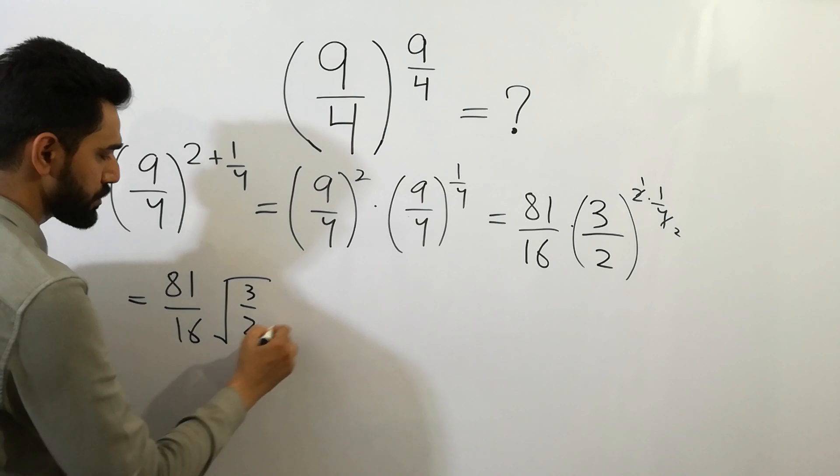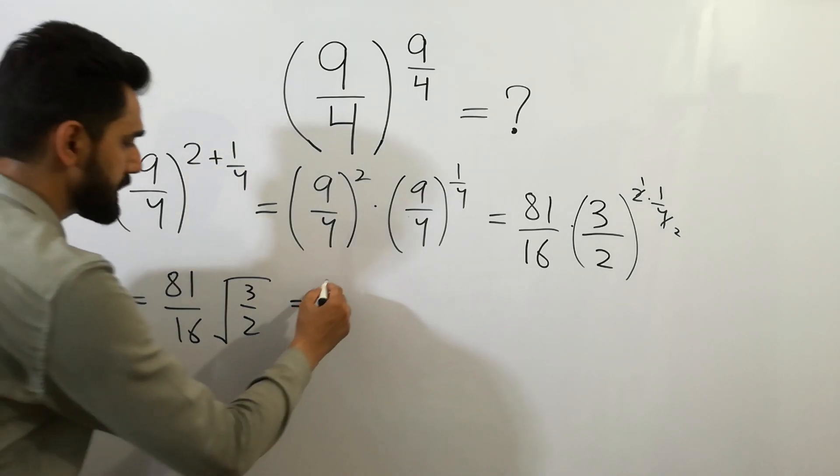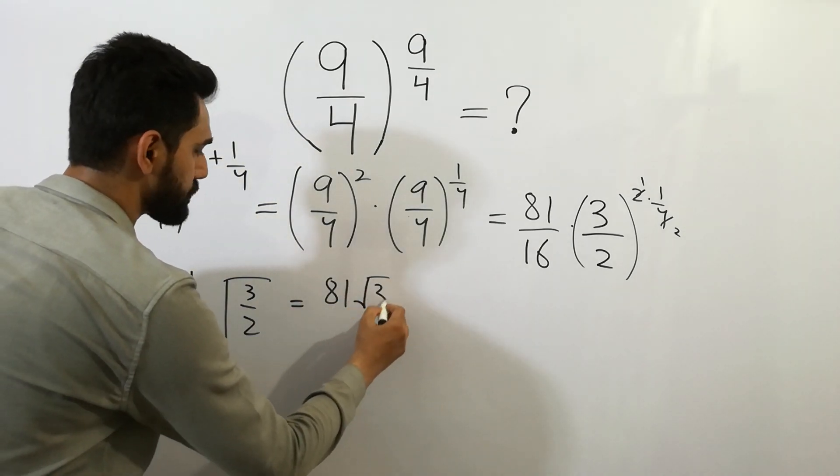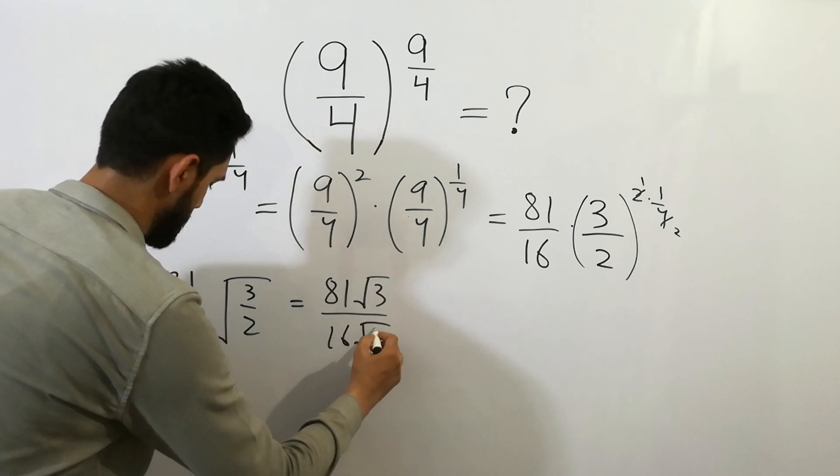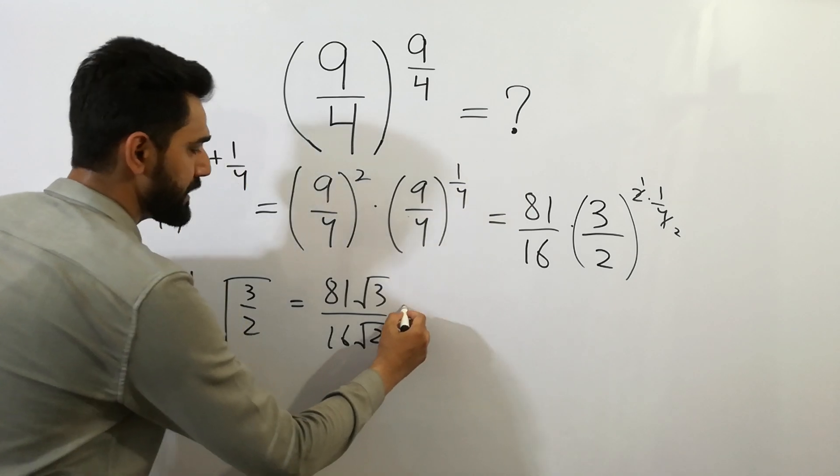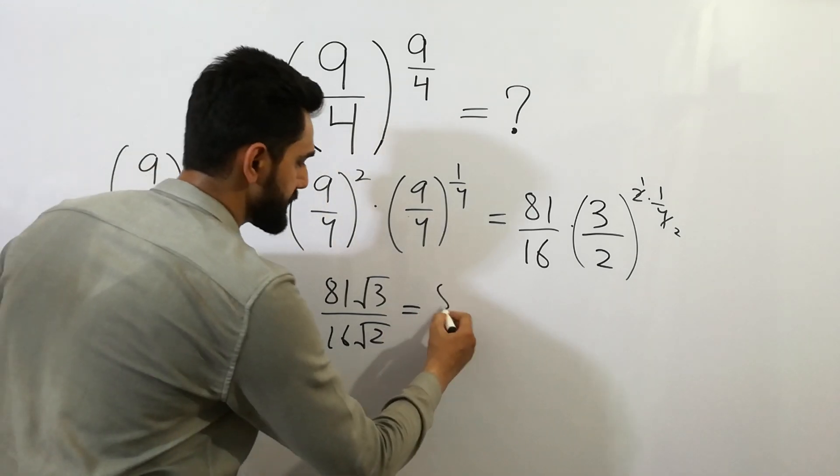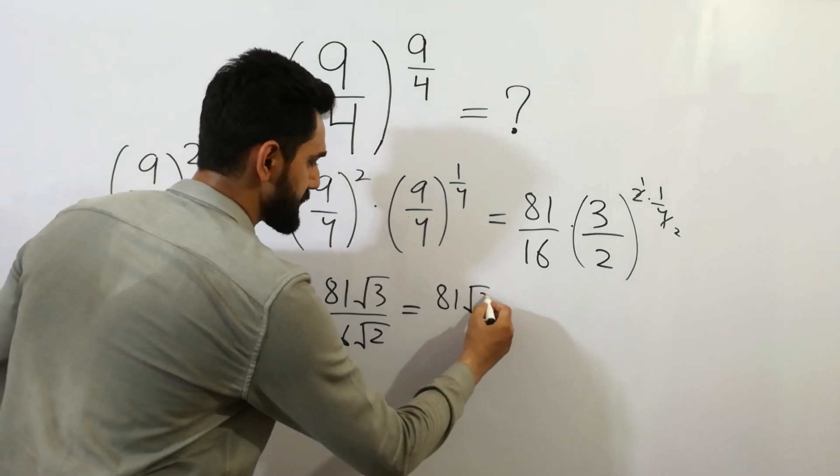3 by 2. If we solve it, we get 81 square root of 3, divided by 16, square root of 2. We can rationalize it,